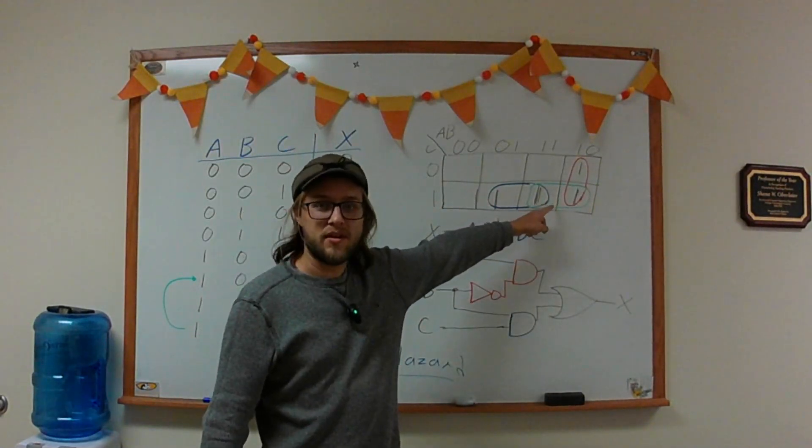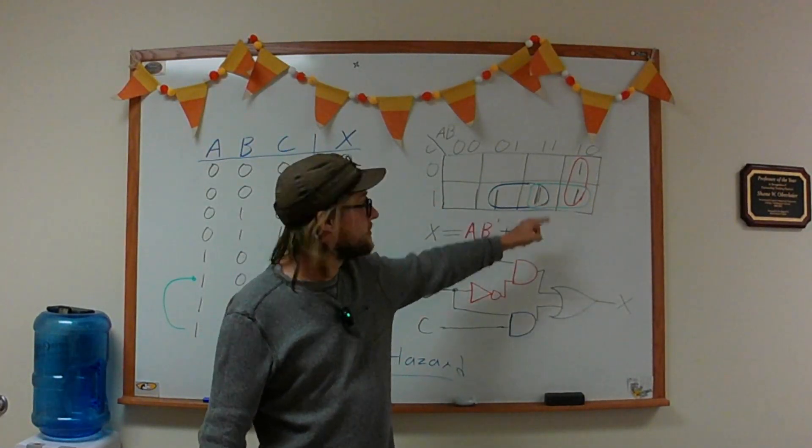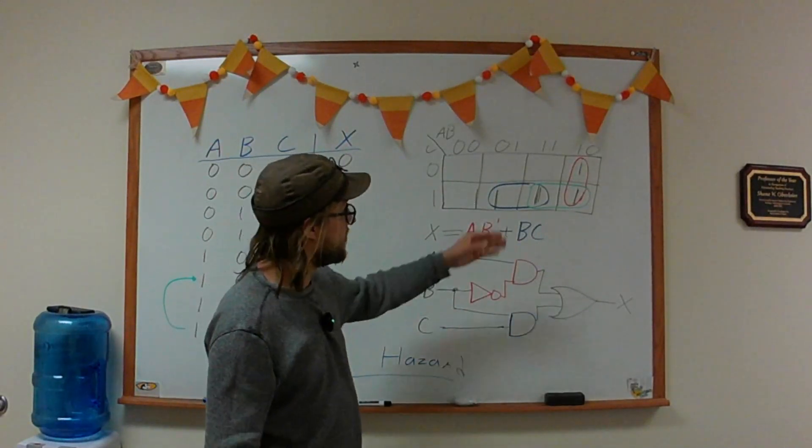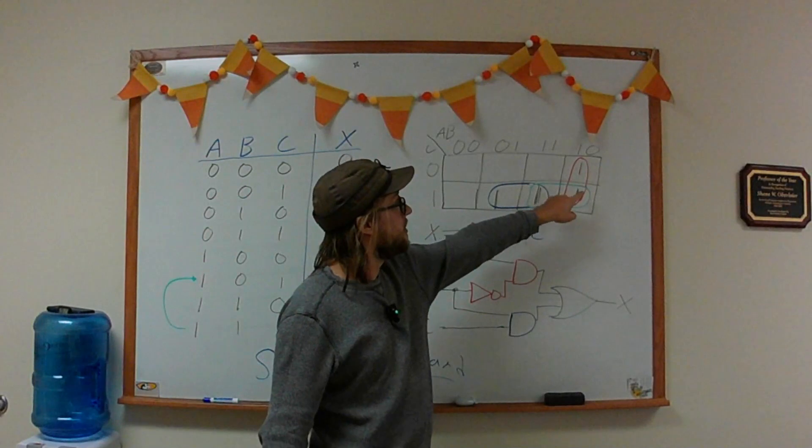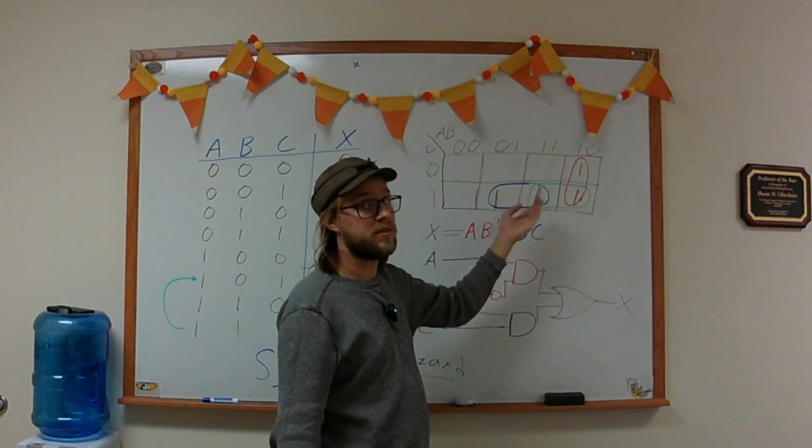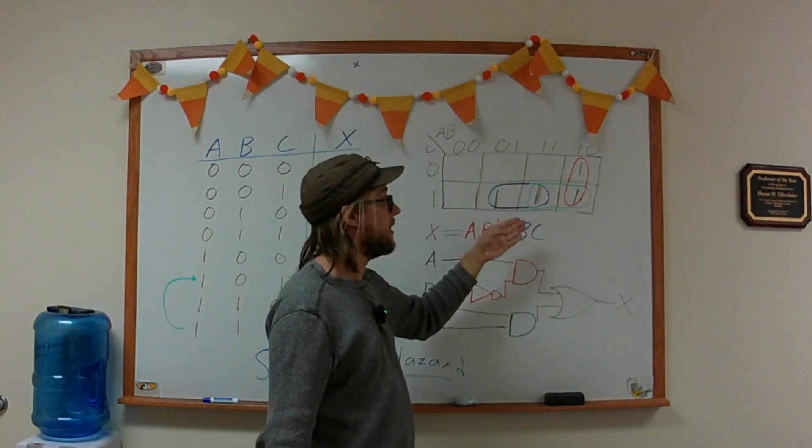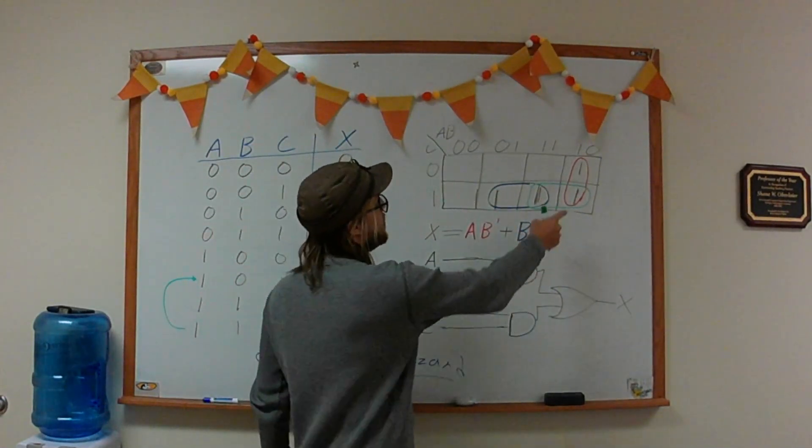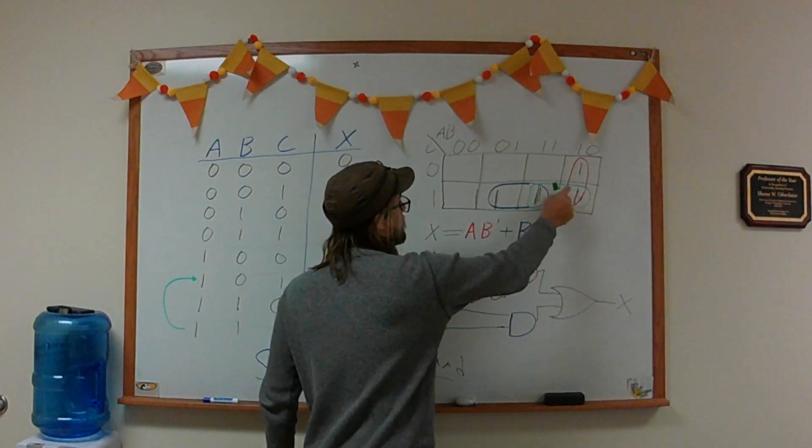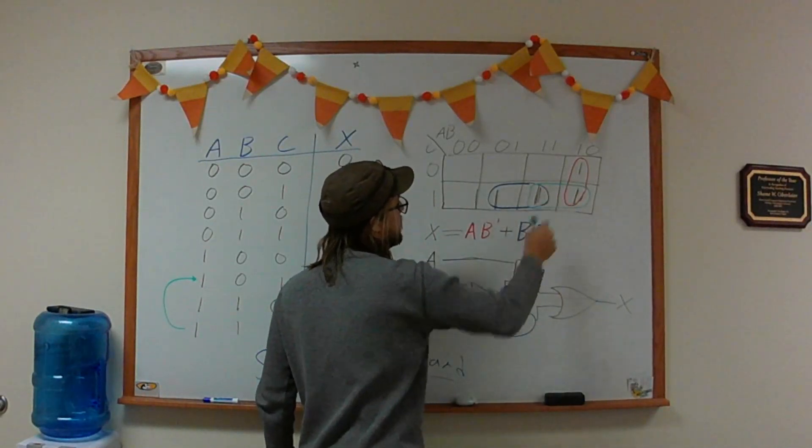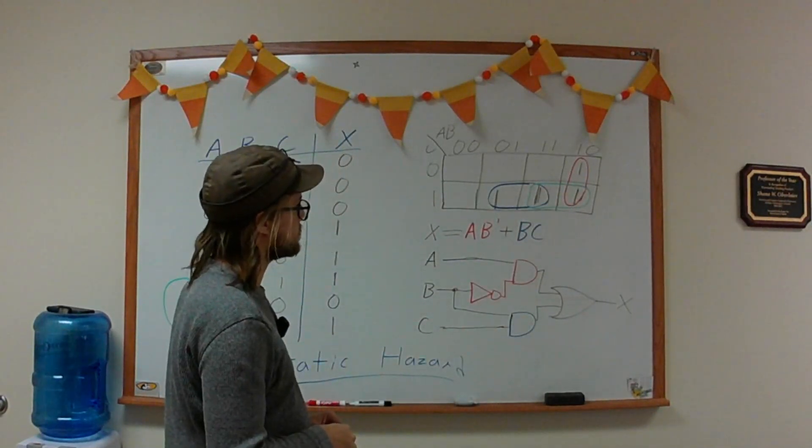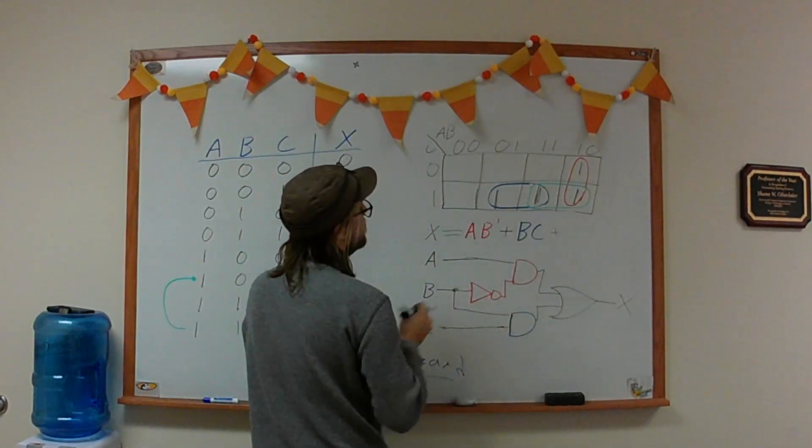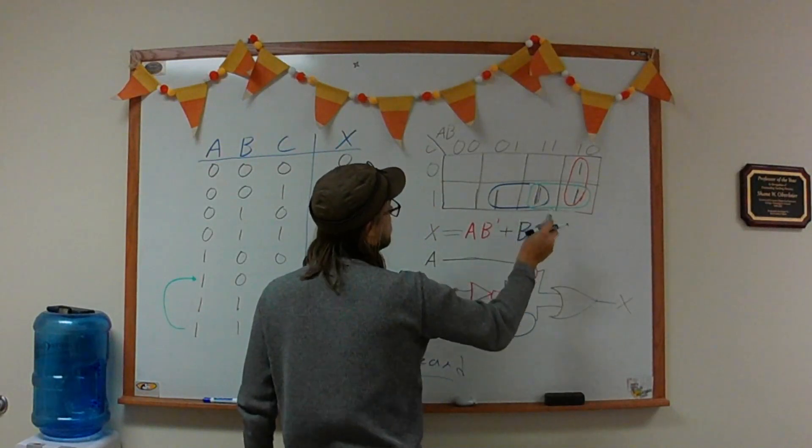At this transition is where the static hazard hides. It's pretty easy to prevent the static hazard from happening by adding a new implicant. We want this implicant to be as big as possible, still needs to follow all our same rules for making implicants, but we need something to cover this transition between this implicant and this implicant. So let's add that to our system. This is AC.